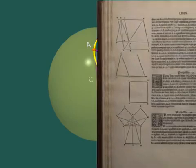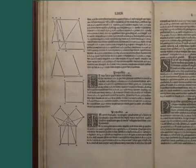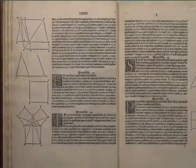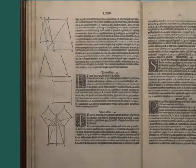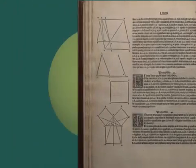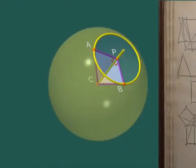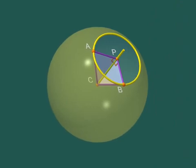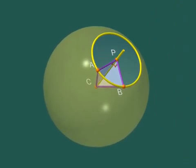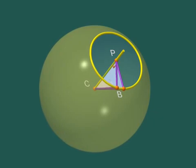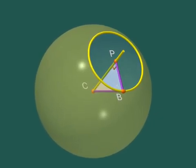But remember Pythagoras' theorem. Since our two right angle triangles have two sides of the same length, their three sides must have the same length. Hence, we have proved that PA and PB have the same length. That is, that A and B are on the same circle with centre P in the blue plane.